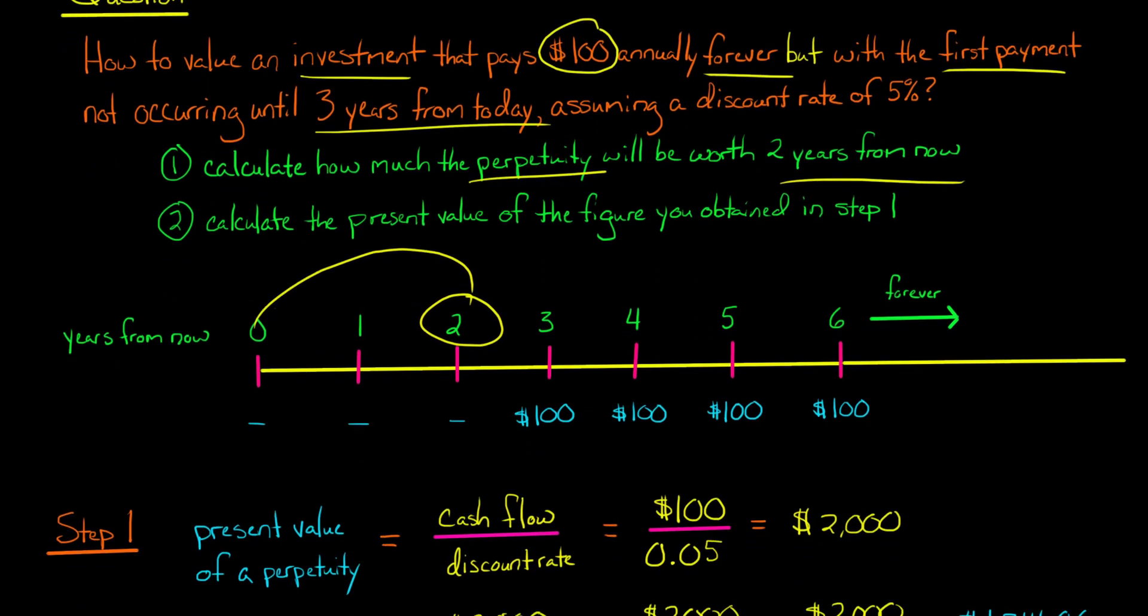Let's say we're assuming a discount rate of 5% here, and our cash flow is $100. So when we want to calculate the present value of that perpetuity as of two years from now, it's going to be equal to $2,000. So basically, we're saying it's an infinite stream of $100 cash flows occurring every year. But as of two years from now, that infinite stream of cash flow, at that point in time, will be worth $2,000.